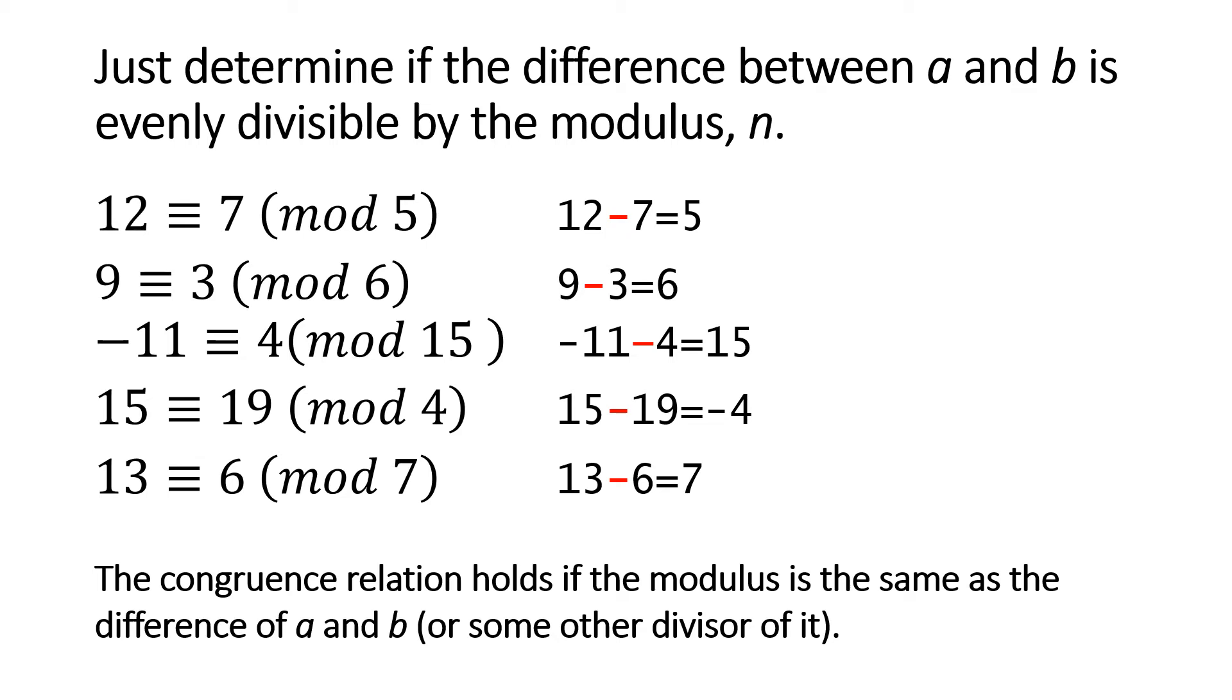In the first example we have 12 congruent 7 mod 5, and that holds true because 12 minus 7 is 5. In the second one we have 9 is congruent 3 mod 6, and that holds true because 9 minus 3 equals 6.